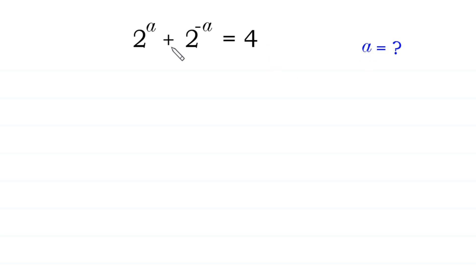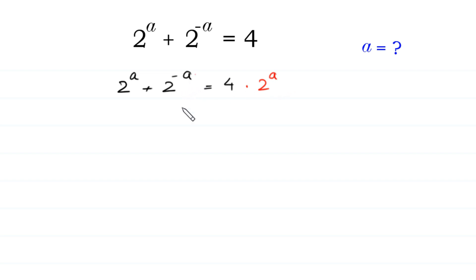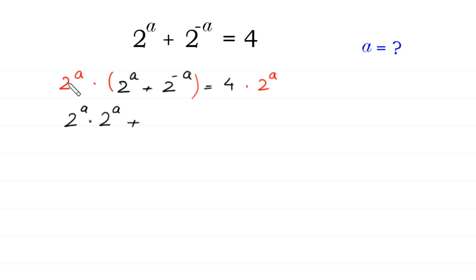First, we multiply both sides of this equation by 2 to the power a. On the left side: 2 to the power a times 2 to the power a, plus 2 to the power a times 2 to the power negative a, is equal to 4 times 2 to the power a.